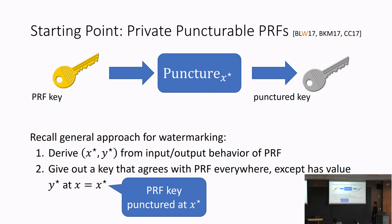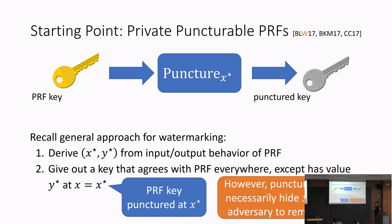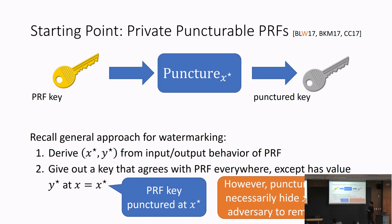However, there are two main problems with using puncturing directly to build watermarking. The first problem is that the punctured key usually does not hide the point x* — if you look at the description of the punctured key, you can actually read off x* directly from the code. In our watermarking scheme, it's critical that the watermarked point is hidden; otherwise the adversary can learn which point was reprogrammed and just change the value at that point to defeat verification.